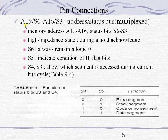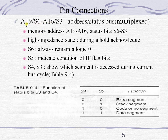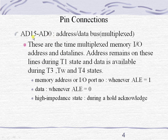The remaining address pins A16 to A19 are also called multiplexed lines because they can carry address information as well as status information. There are totally 20 address lines — A0 to A15 and A16 to A19 — so the processor can address up to 1 MB of memory, which is 2 to the power of 20. It also has 16 data lines, D0 to D15.